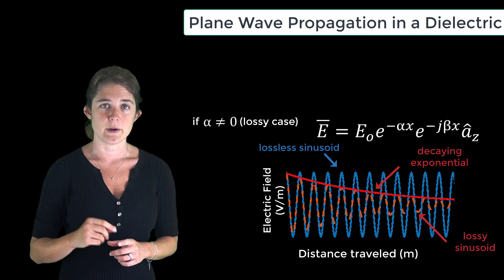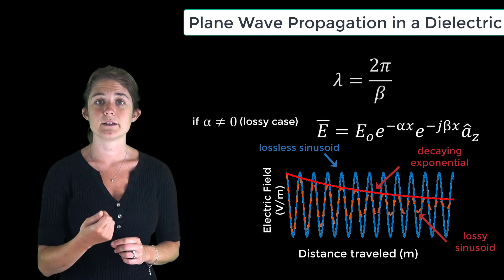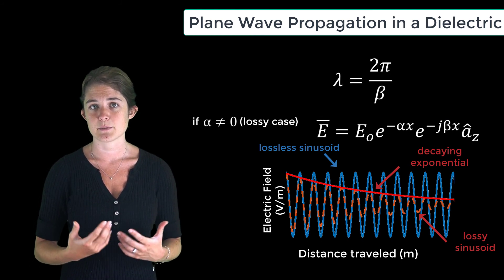Note that the frequency of the wave is unchanged by the introduction of loss. The wavelength is still equal to 2 pi over the lossless propagation constant, beta.